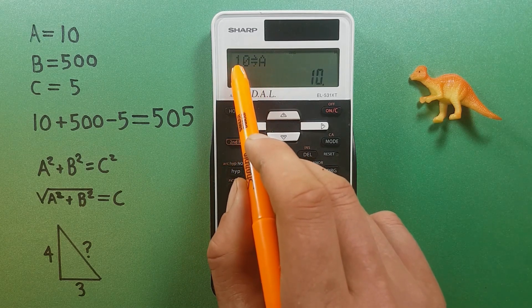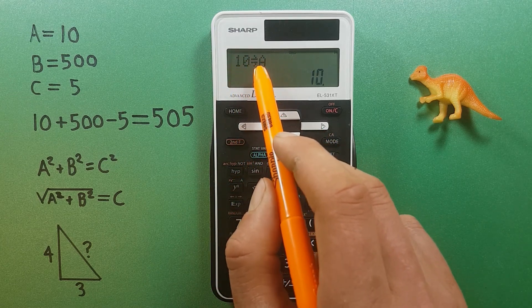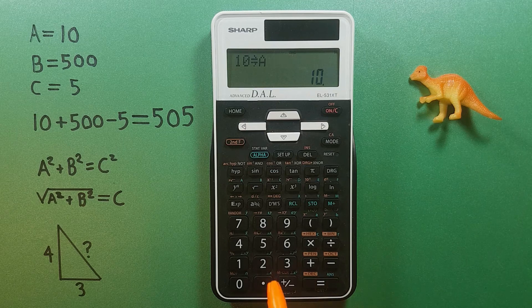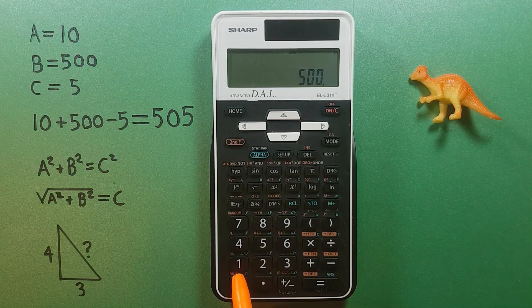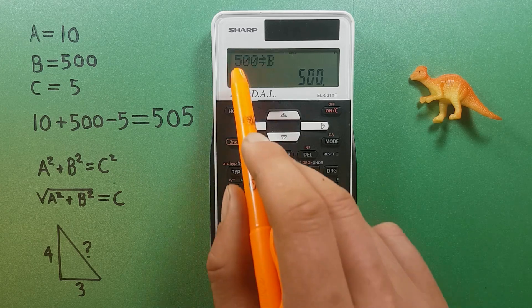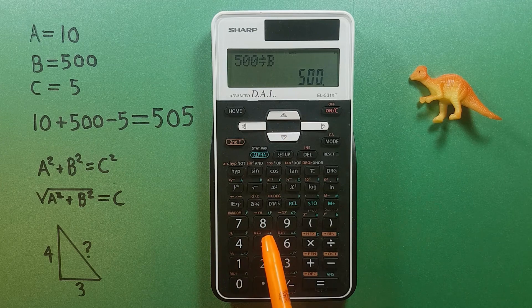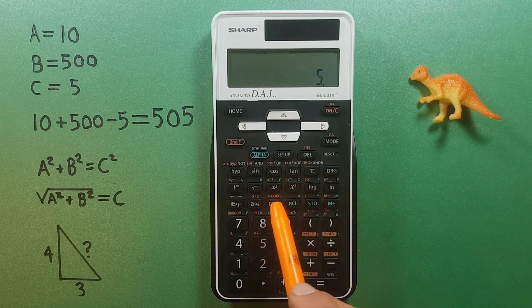At the top of the screen we see 10 going into A, so this means 10 has been stored as A. Now we'll put 500, store into B. There we go, 500 into B.